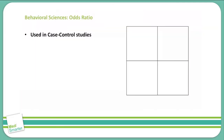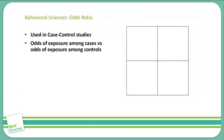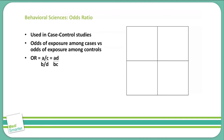Let's discuss a couple calculations. The odds ratio is used in case-control studies and it measures the odds of exposure among cases versus the odds of exposure among controls. The formula for odds ratio is A divided by C over B divided by D, which we can rearrange to the easier formula: A times D over B times C, as you see here.